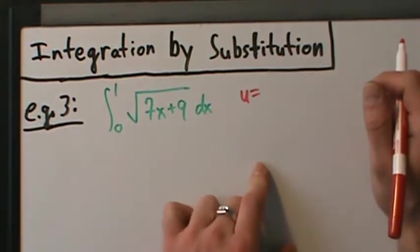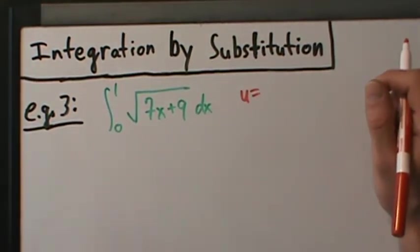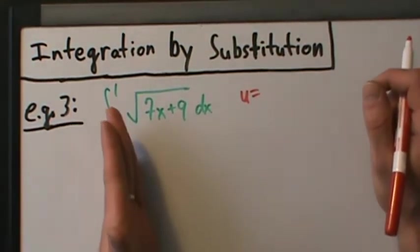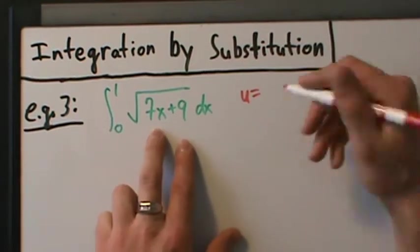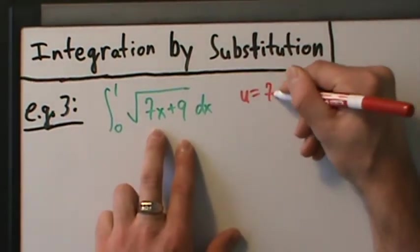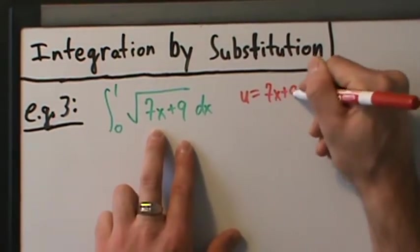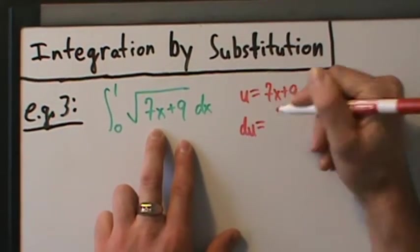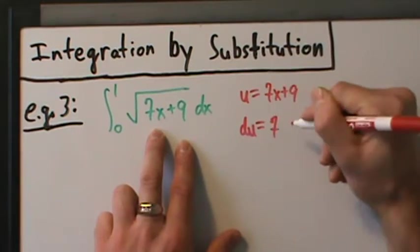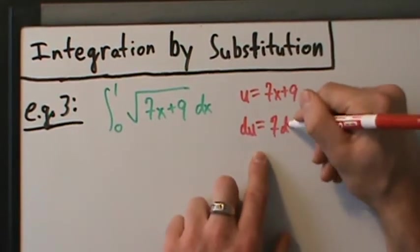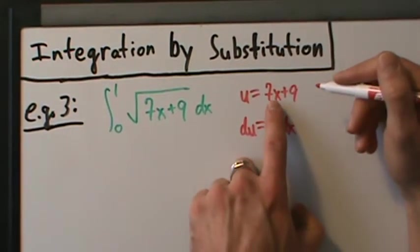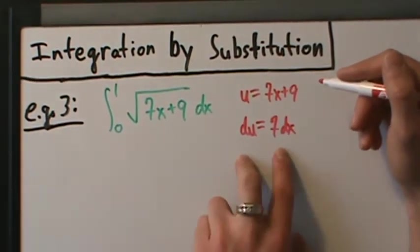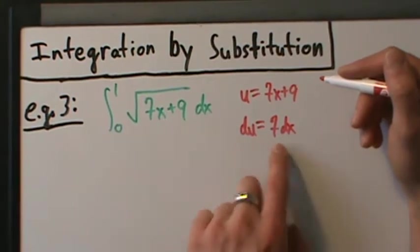Remember that's always the trick with integration by substitution: look for a function and its derivative, or a function and a constant multiple of its derivative. That is happening here. The function we want to pick is 7x + 9, and its differential is going to be du = 7 dx.